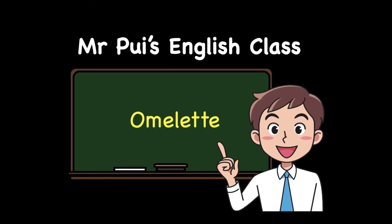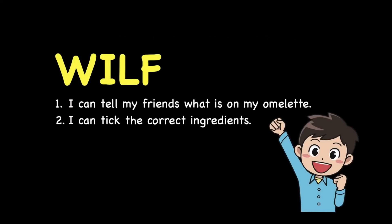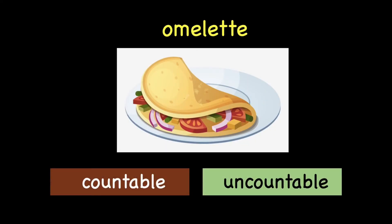Hello, boys and girls. Welcome back to Mr. Pui's English class. Today, we are going to learn about omelette. Today's goals are: I can tell my friends what is on my omelette, and also I can tick the correct ingredients. In the previous lesson, we already learned that omelette is a countable noun — you can count one omelette and two omelettes. Now today, we are going to take a look at what is inside the omelette.